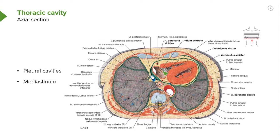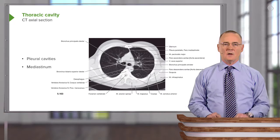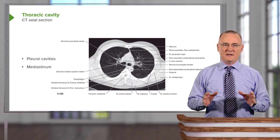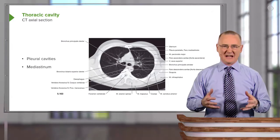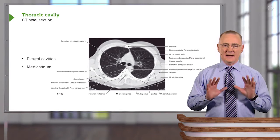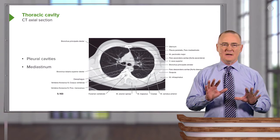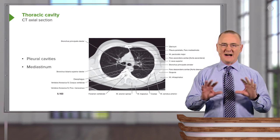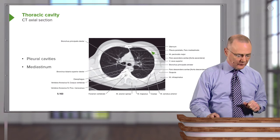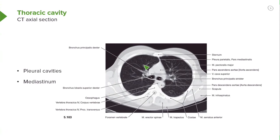Let's now apply the illustration to radiologic imaging and take a look at the thoracic cavity as viewed with CT. We are looking at an axial section through the thoracic cavity. Keep in mind what appears dark versus what appears bright. The most obvious dark areas are these huge regions here, which represent air in a lung. Since this is the left side of the image, this is the patient's right lung.